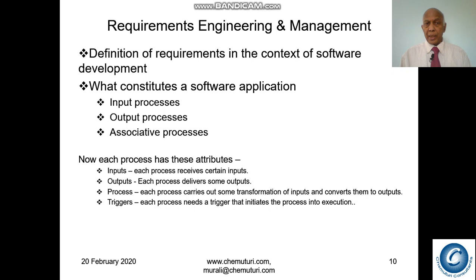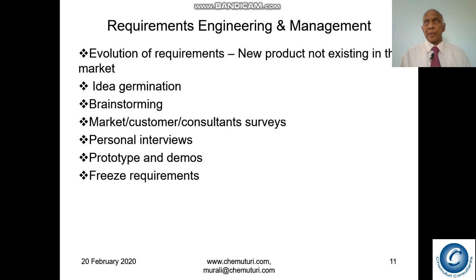Each process has these attributes. Inputs — each process receives certain inputs. Outputs — each process delivers some outputs, which may even go to disk to store data. Process — each process carries out some transformation of inputs and converts them to outputs, which may be intermediate or final. Triggers — each process needs a trigger to initiate its execution.